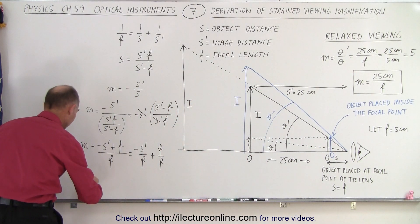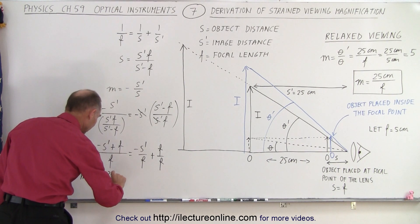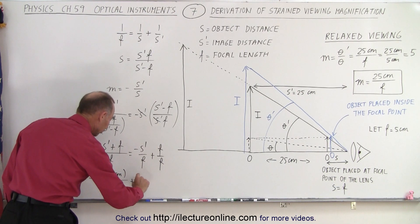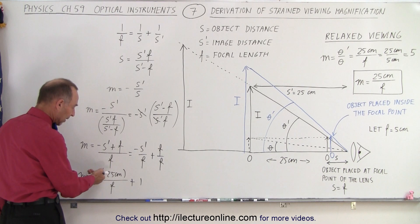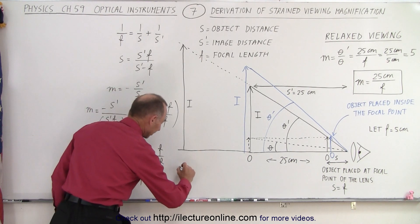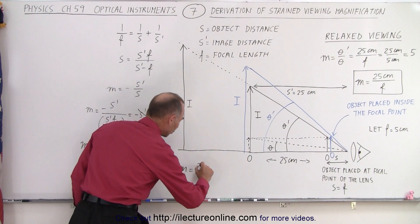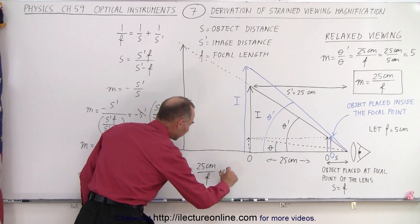So that means that the magnification is equal to minus times a minus 25 centimeters divided by the focal length plus 1. And so eventually, if I solve that, minus times a minus becomes plus, we can see that the magnification for strained viewing is going to be equal to 25 centimeters divided by the focal length plus 1.